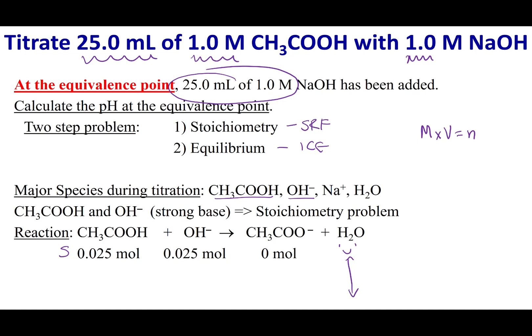So let's go ahead and do our reaction, our R, and our R is going to be based off our limiting reagent. But at the equivalence point, I have equal moles, so that means both of these things are going to be my limiting reagent. So that means I'm going to subtract 0.025 moles from each one of my reactants, and I'm going to add plus 0.025 to my products.